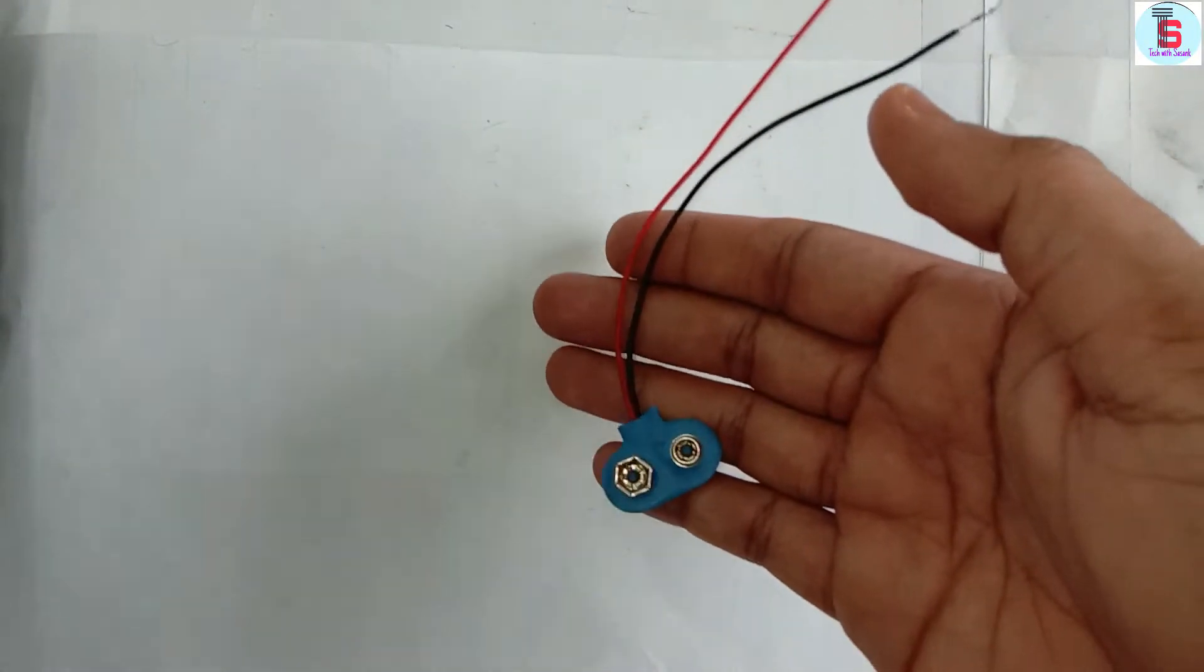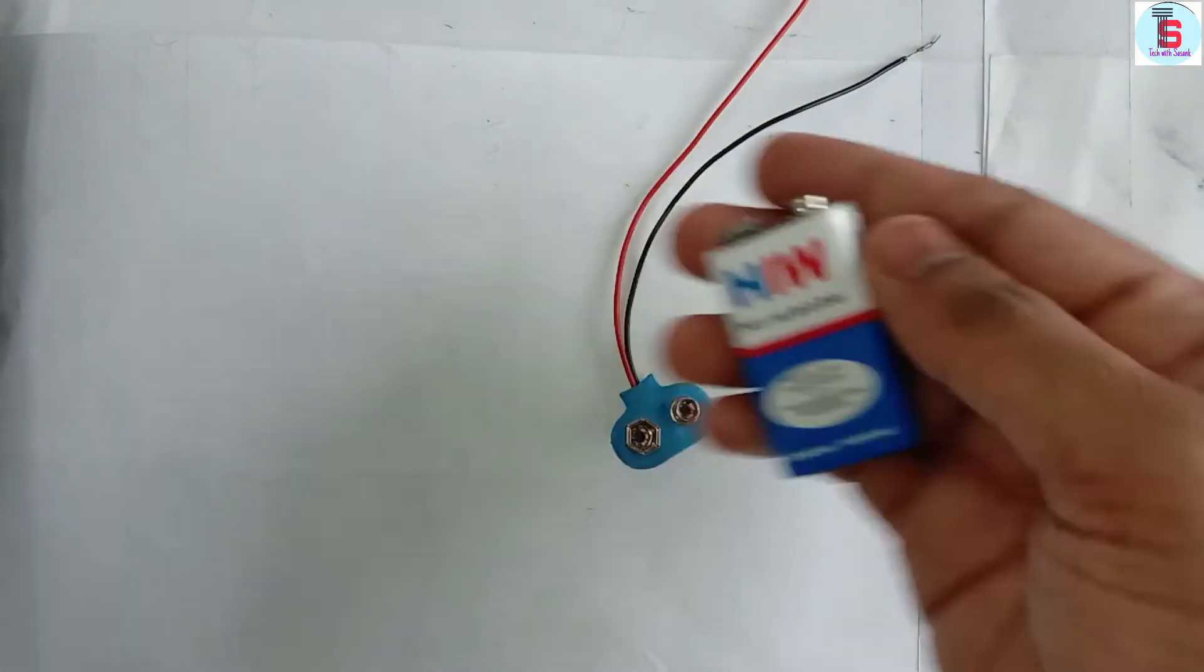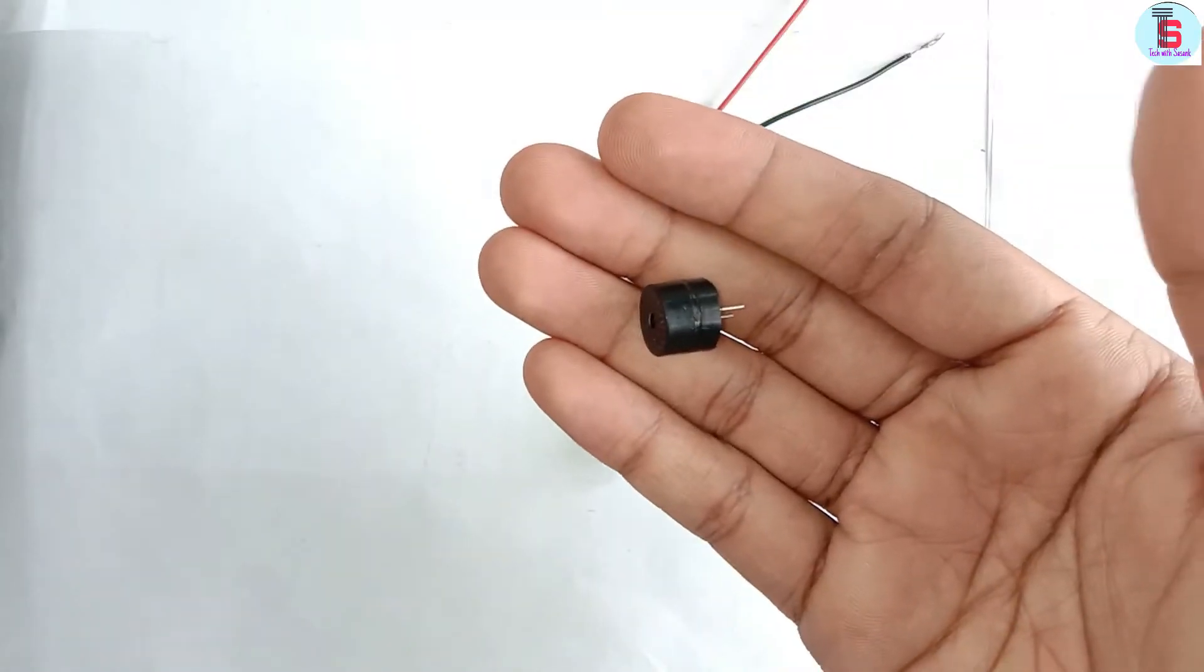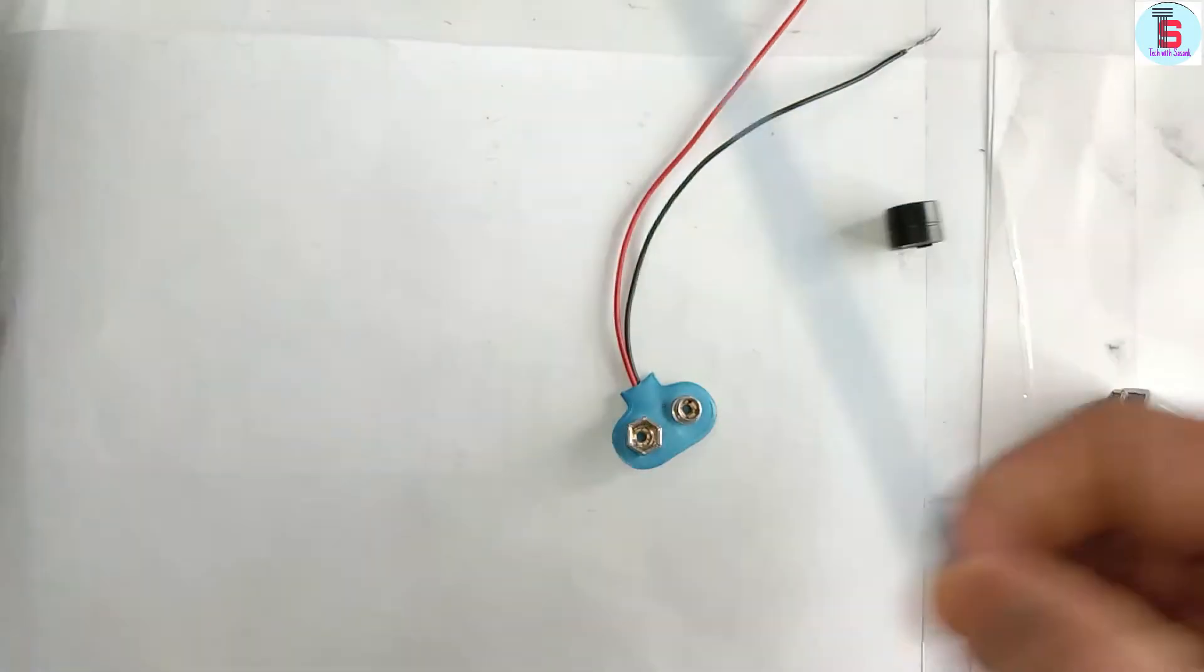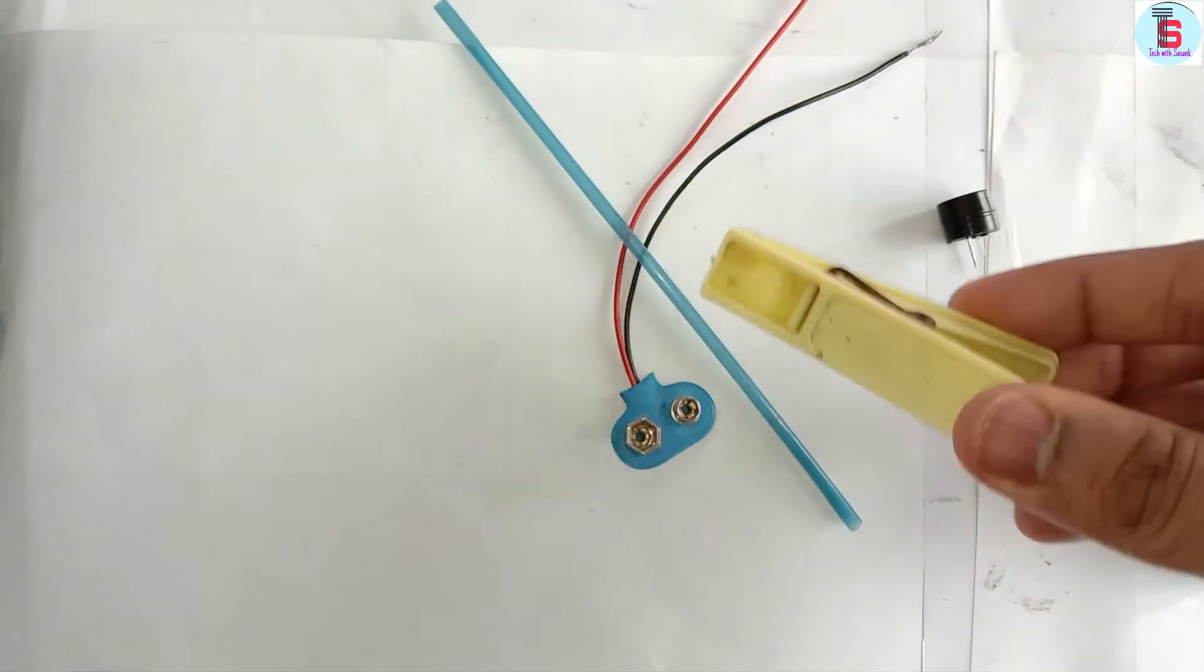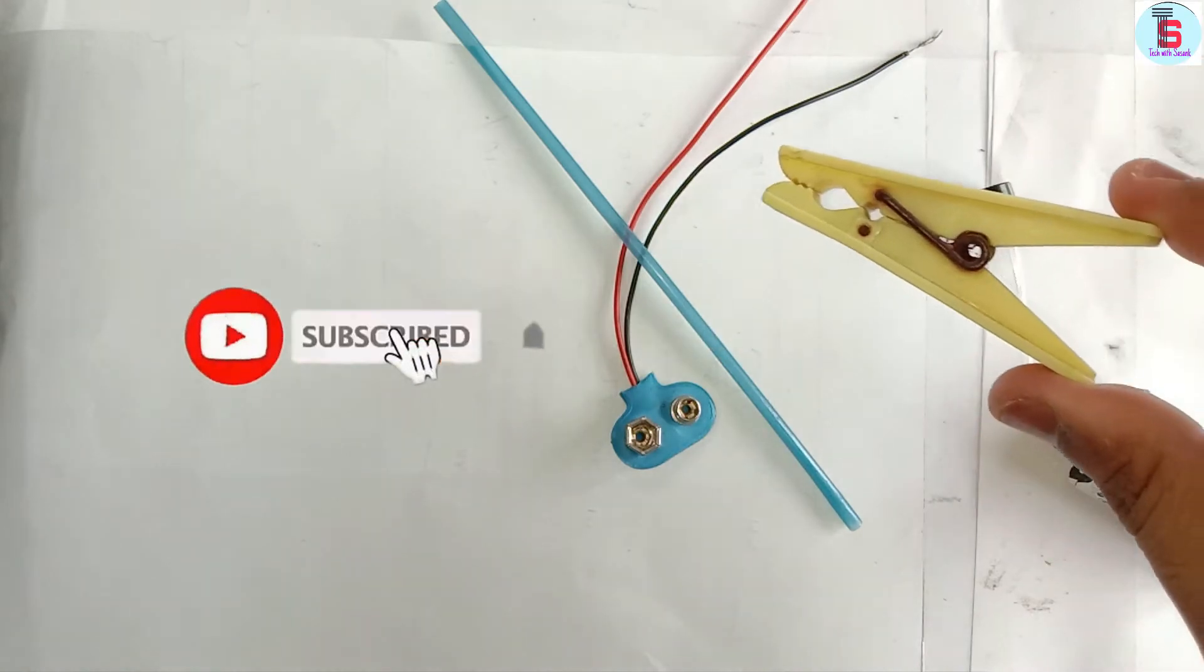We have a battery connector, a 9V battery, a small buzzer, a straw, and a clip. Next is the direct project.